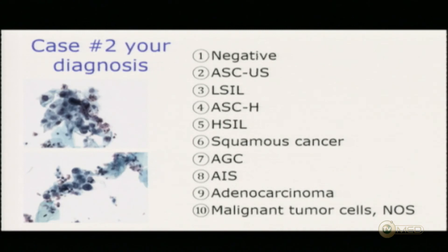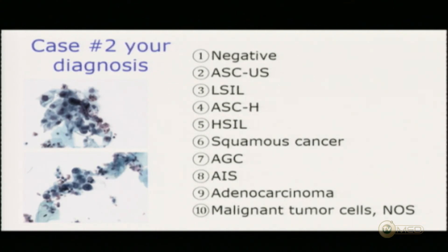Who is going to call that negative? Who is going to call it low cell? High cell? High cell? Just a couple of high cells? Who is going to call it glandular? Cancer? Squamous cell cancer? Nobody. Who is going to call it a glandular lesion — between AGC and adenocarcinoma in situ? One, two. That's between high cell and high-grade lesion.